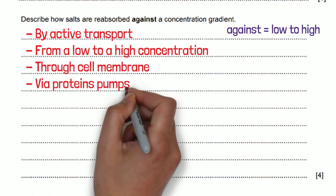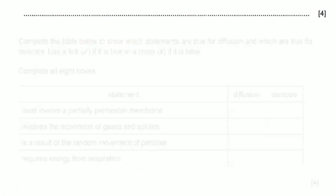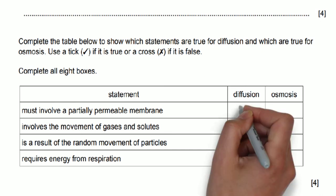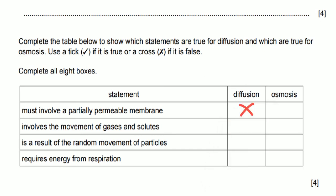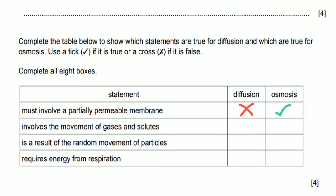For this question we need to be able to give a tick or a cross depending on if we think it's true or false. The first statement states that it must involve a partially permeable membrane. Well for diffusion this isn't true because gases can diffuse in a room where there's no permeable membrane. For osmosis this is true however. The second one involves the movement of gases and solutes. For diffusion this is true. This is false for osmosis because osmosis is only talking about the movement of water molecules.